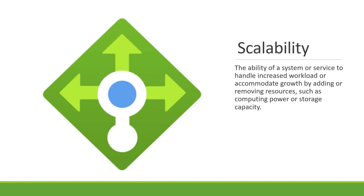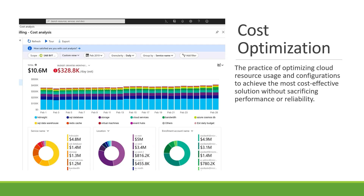Cost optimization in the cloud involves implementing strategies and practices to minimize cloud resource costs while maximizing value. It includes right-sizing resources, leveraging pricing models, and optimizing usage.